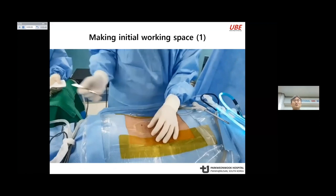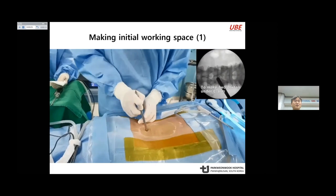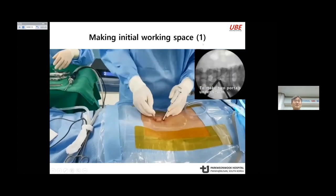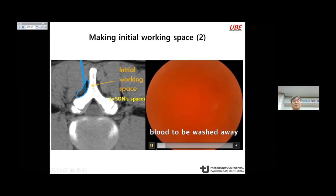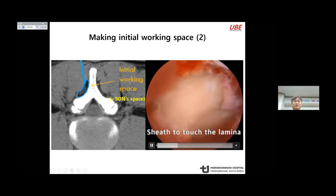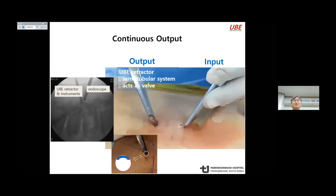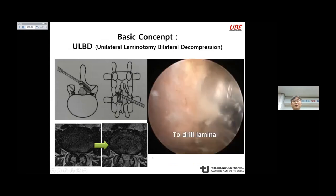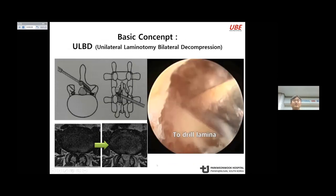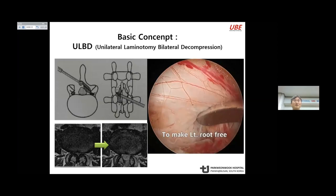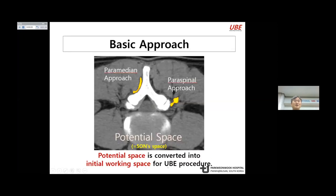Caudal entry is for the instrument and cranial entry for the endoscope. After serial dilation, the working space is made. The trocar is inserted and the lamina is exposed. This area is the initial working space called the 'sonzo space.' I always emphasize continuous outflow. This video shows the basic procedure of UV decompression for central stenosis. The ipsilateral and contralateral ligamentum flavum is removed — this is the ULBD state. The potential space known as the sonzo space is converted into the initial working space for the UV procedure.